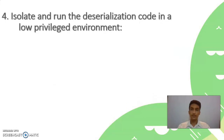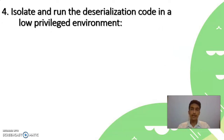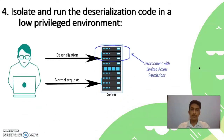The fourth method is to isolate and run the deserialization code in a low-privilege environment. On the main server, create a virtual environment that handles object deserialization requests only. Since this environment has limited access to resources and important data, even if an attacker is able to put malicious code on the server, he won't be able to get the important data because his malicious code will run in the low-privilege environment. So our system will remain in a safe state.